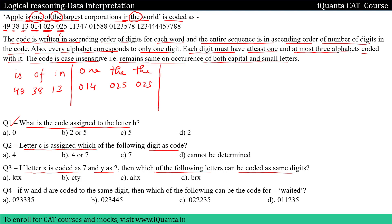After this we have 'apple' and 'world'. These are five-letter words, so we need five-digit numbers. We have 11347 and 01588 as the five-digit possibilities.